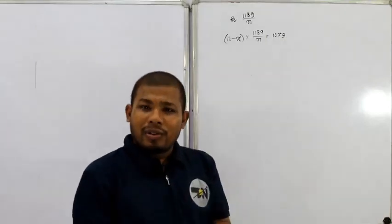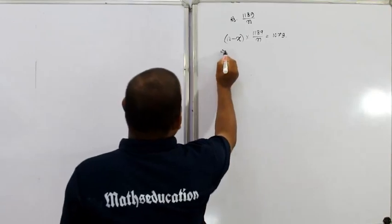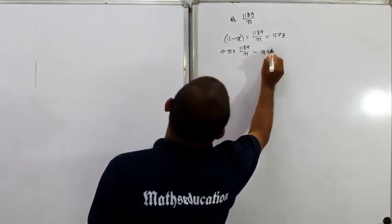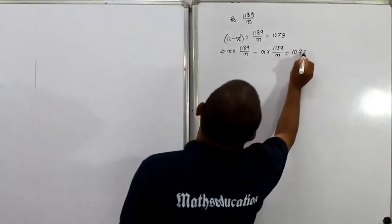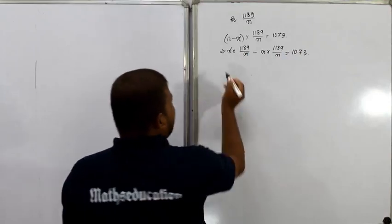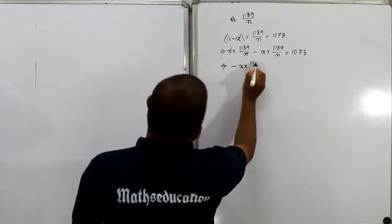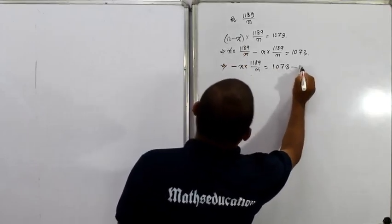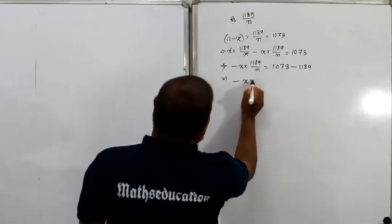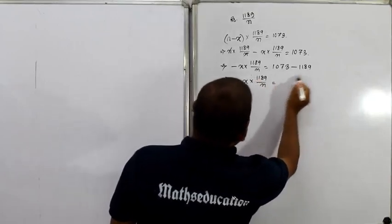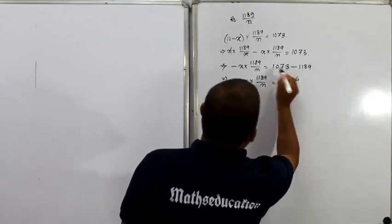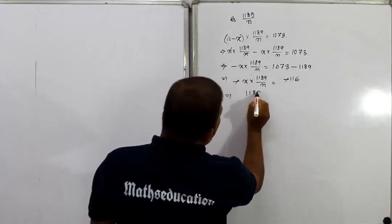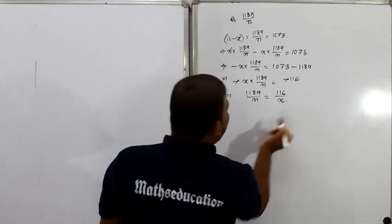The worker receives 1073 rupees. If I apply the distributive property and try to solve the equation normally: n into (1189 divided by n) minus x into (1189 divided by n) equals 1073. If I cancel n, then simplifying the equation gives: x into (1189 divided by n) equals 116. Rearranging with sign change: minus x into (1189/n) equals minus 116.